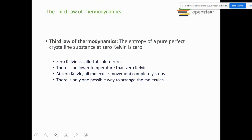Now let's talk about the third law of thermodynamics. This involves the concept of absolute zero — a temperature of 0 Kelvin, equivalent to −273.15°C. The coldest temperature ever recorded on Earth was in Vostok, Russia at about −89°C, which is still much warmer than absolute zero.